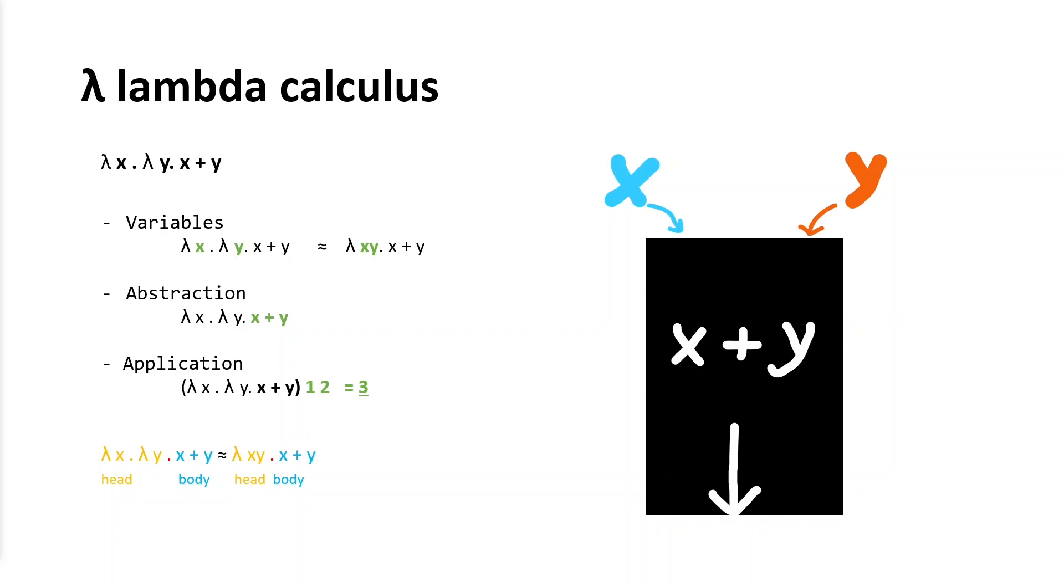Lambda calculus consists of three things: variables, abstraction, and application. Let's have a look at this example. Every single lambda expression begins with lambda symbol, which is followed by input variable. If there are more variables, there are more lambda symbols with variables separated by dot. We can simplify this notation with one lambda symbol at the beginning, followed by all variables.